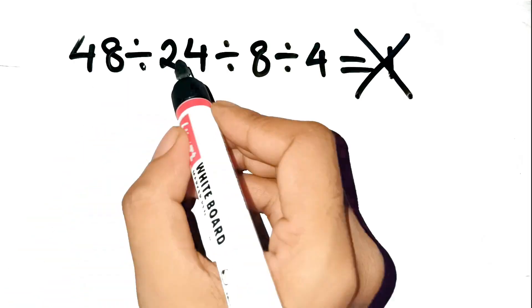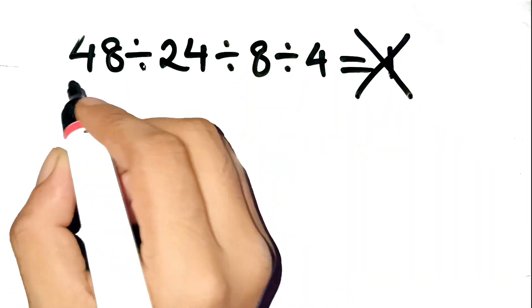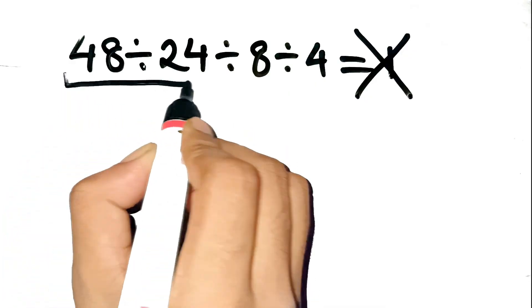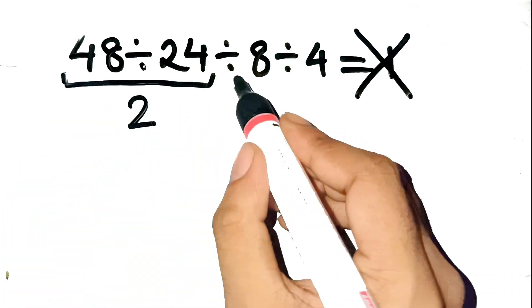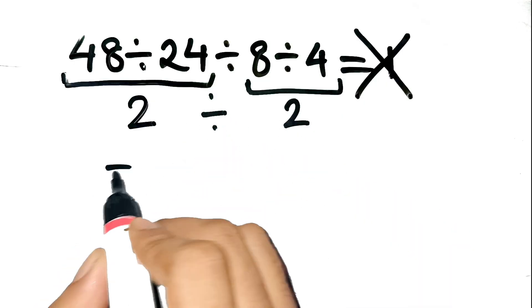The problem is 48 divided by 24 divided by 8 divided by 4, and many people go like this. 48 divided by 24 is 2, then 8 divided by 4 is 2, finally 2 divided by 2 is 1.